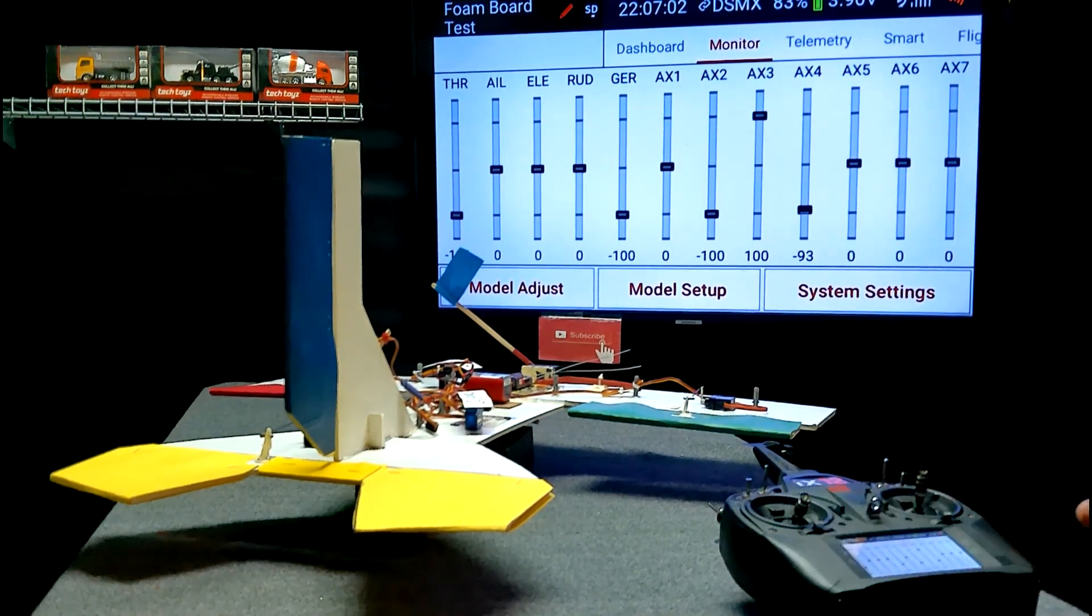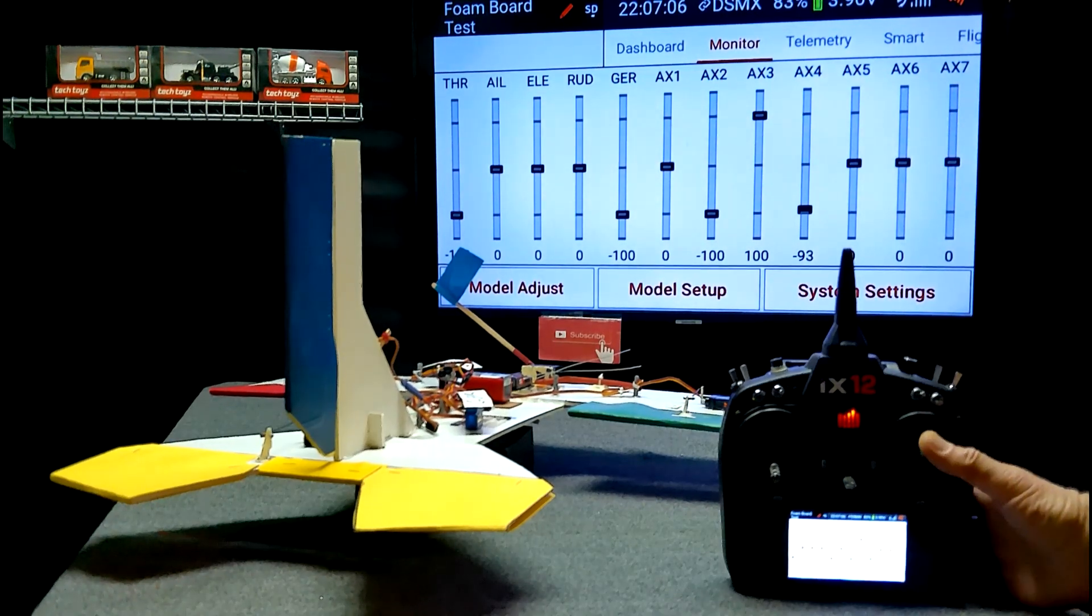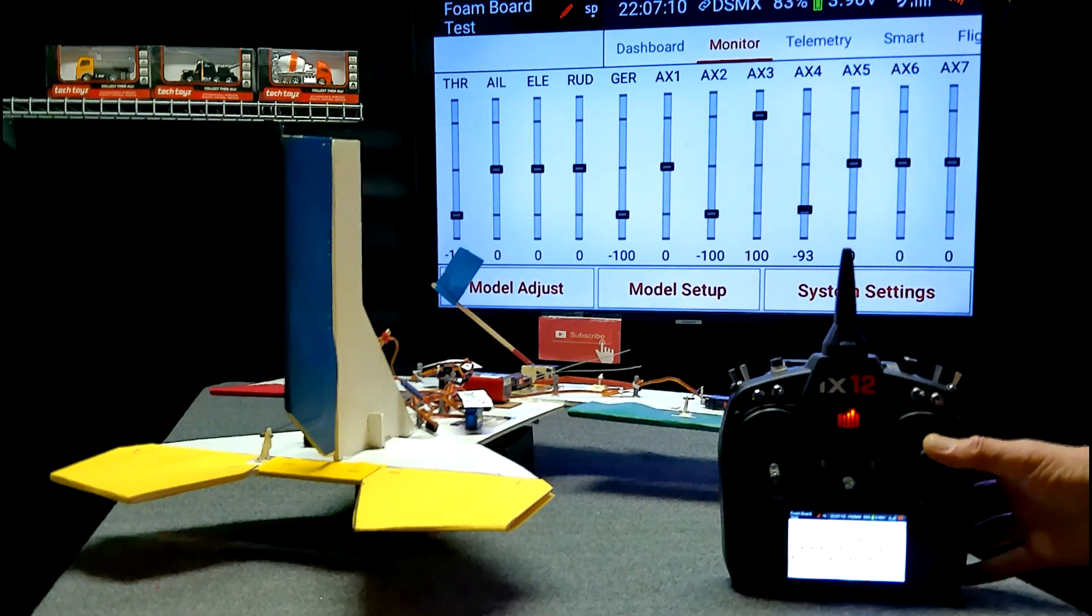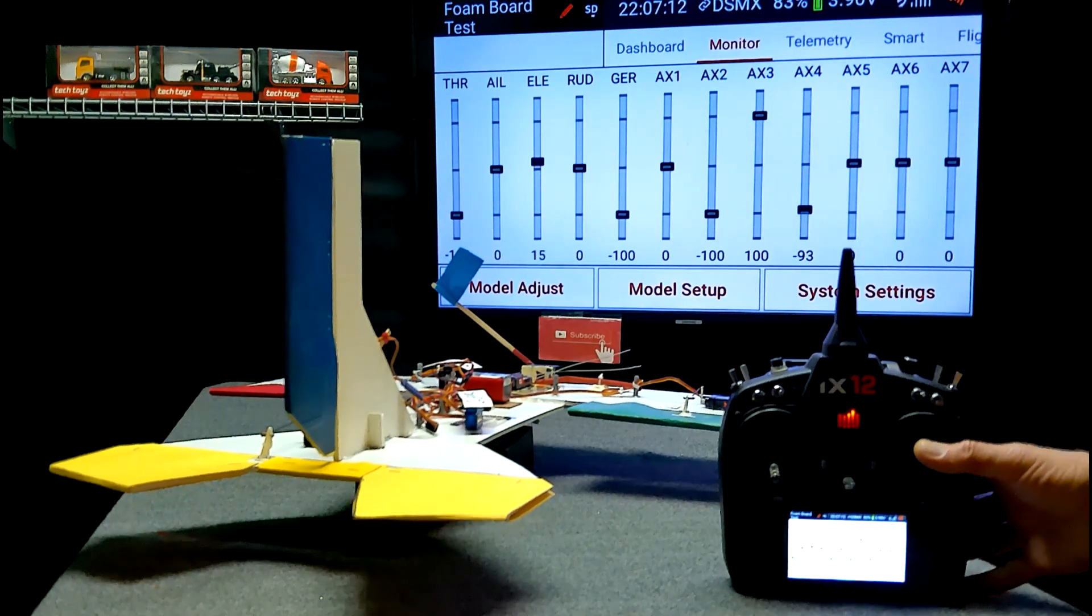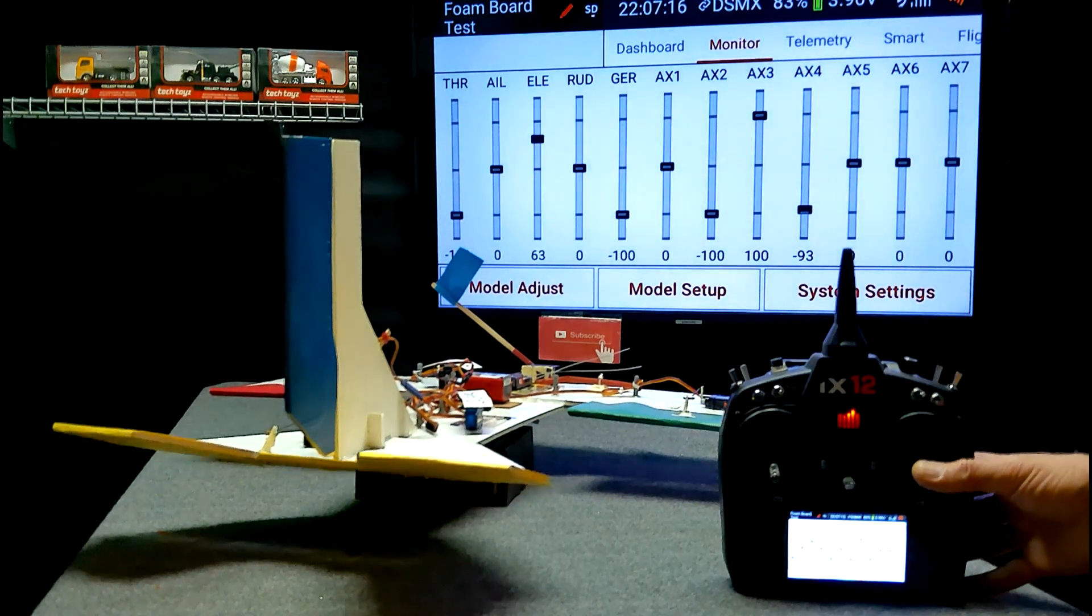We're in our setting with no Expo. Watch the sliding bar. So as I give it up elevator, you can see the sliding bar is moving and moving. And then look at the yellow elevator. It's moving right along with it.